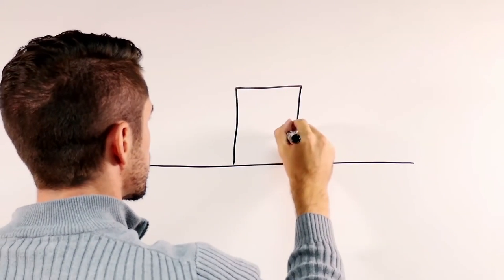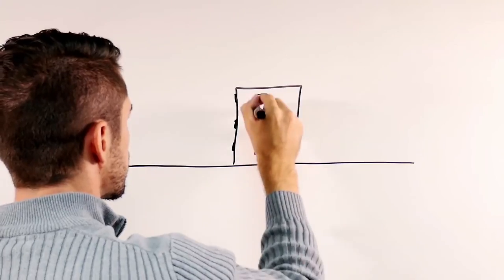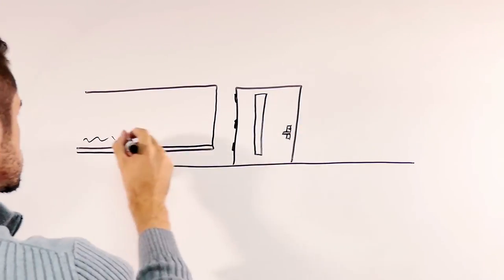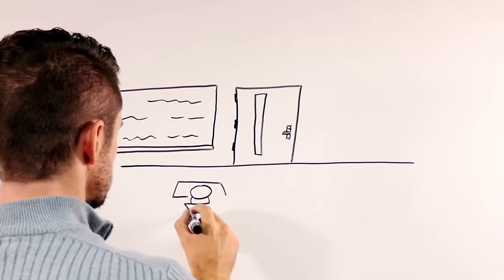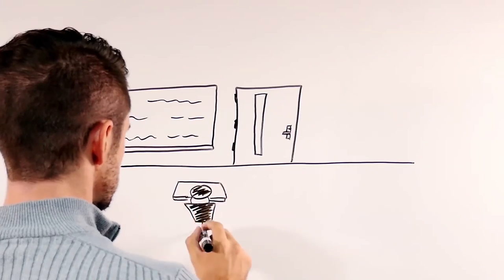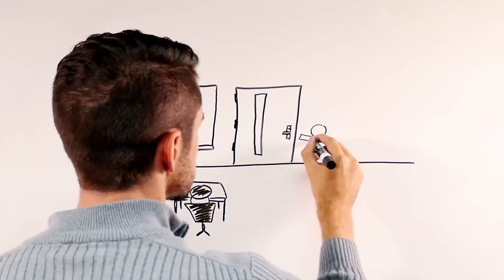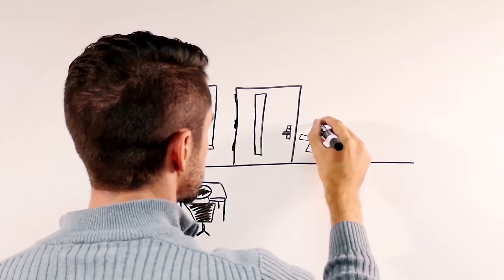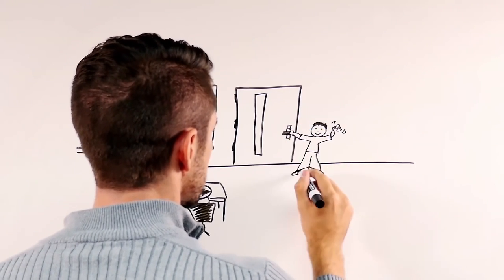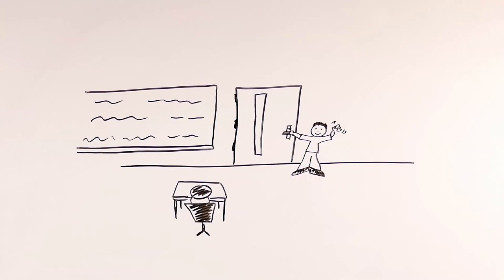Remember, all of these lock functions allow free egress by turning the inside lever, as required by the model codes. In addition, all of these options allow authorized access from the outside by staff or emergency responders. Balancing life safety with security is critical when choosing a locking method for classroom doors.